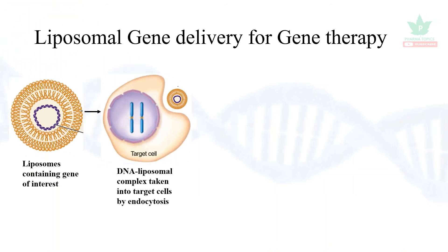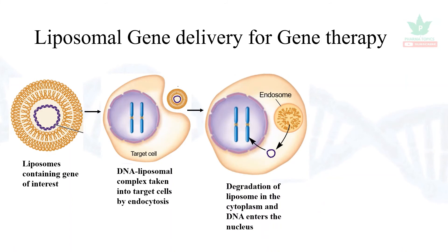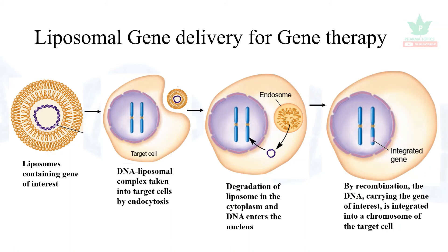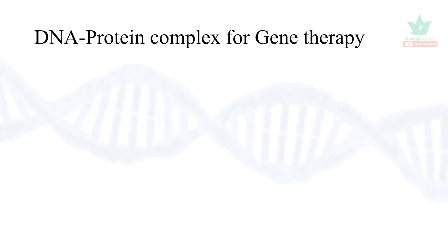The next method is liposomal gene delivery. Liposomes carrying the target genes are attached to the target cells and taken up by endocytosis. Degradation of the liposome occurs in the cytoplasm, releasing the good gene, which then enters the nucleus and recombines with the DNA, attaching the gene of interest into the host chromosome of the target cell. Two types of liposomes are available: anionic and cationic.